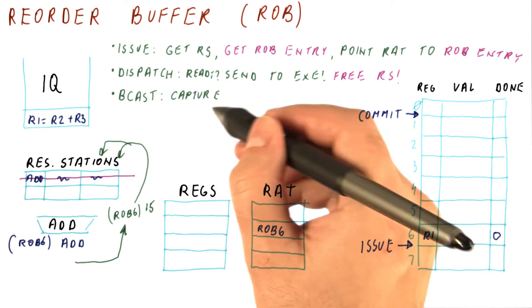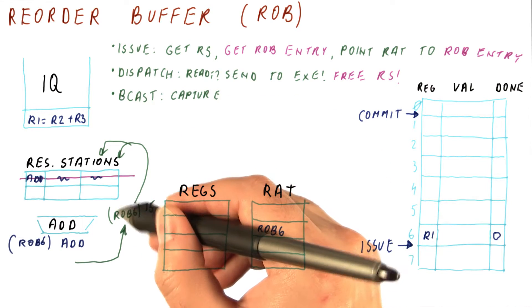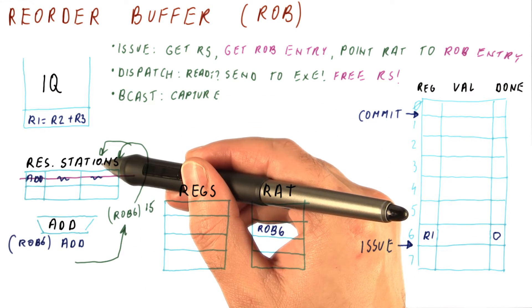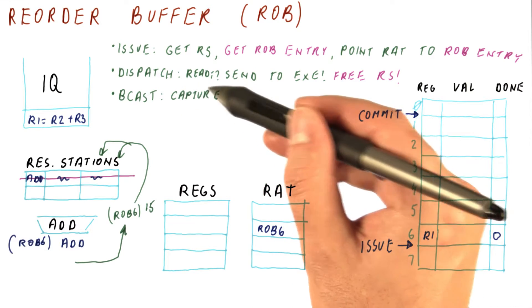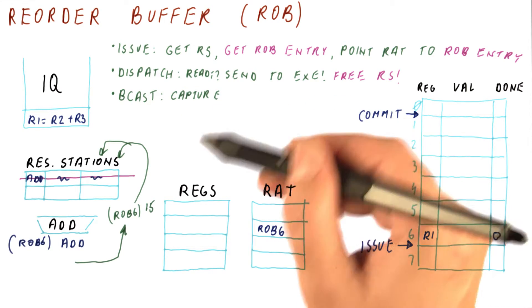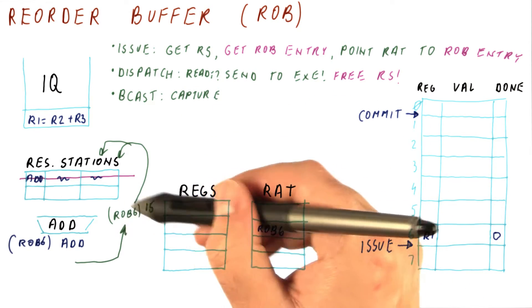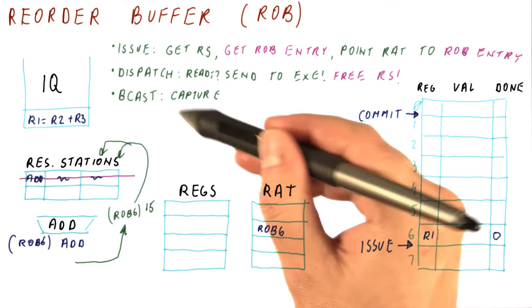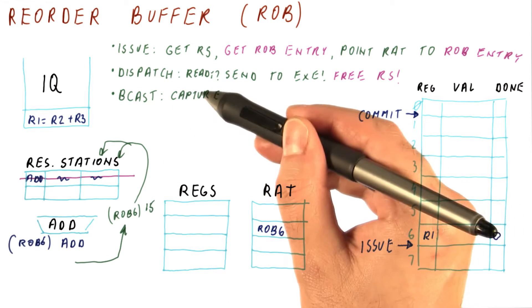And they normally capture the result based on the tag as before. This result is now broadcast to the reservation stations, and they capture this result if they need it. And those that need the result of this instruction will capture the value of 15, just like we did in Tomasulo's algorithm.